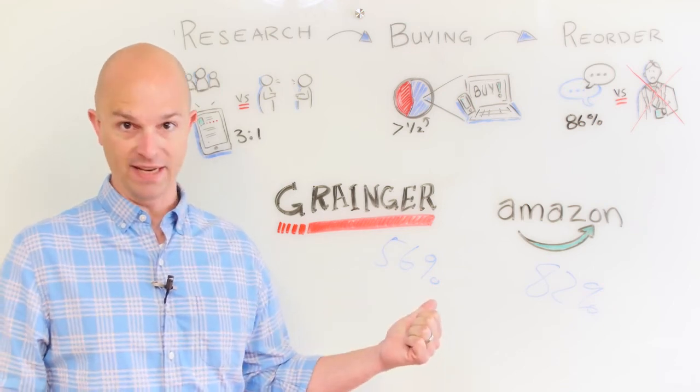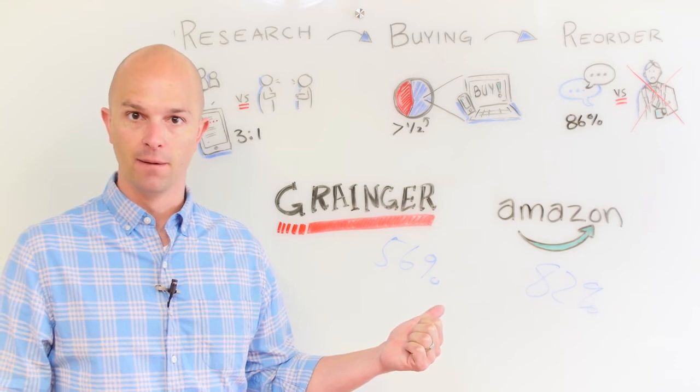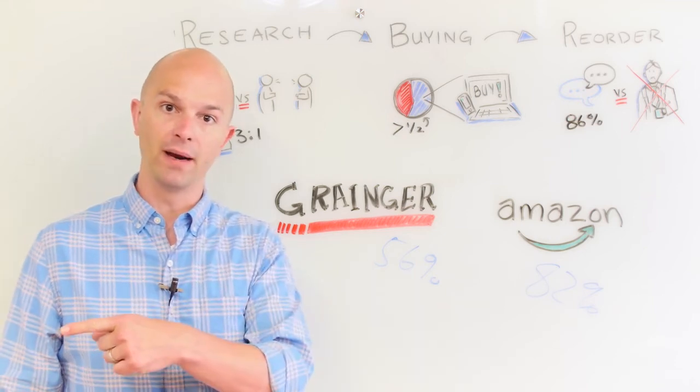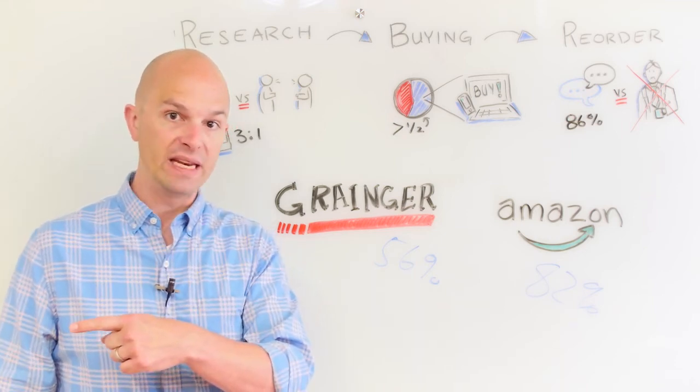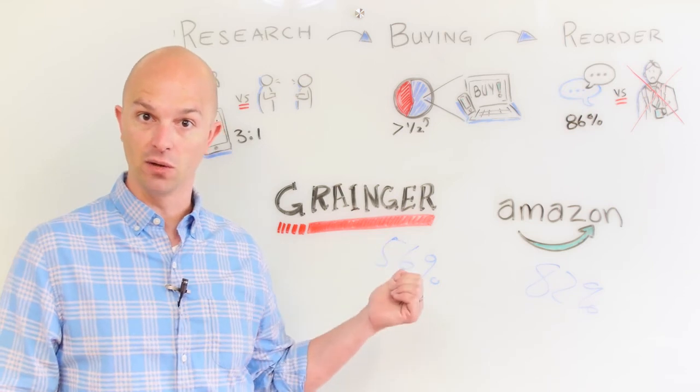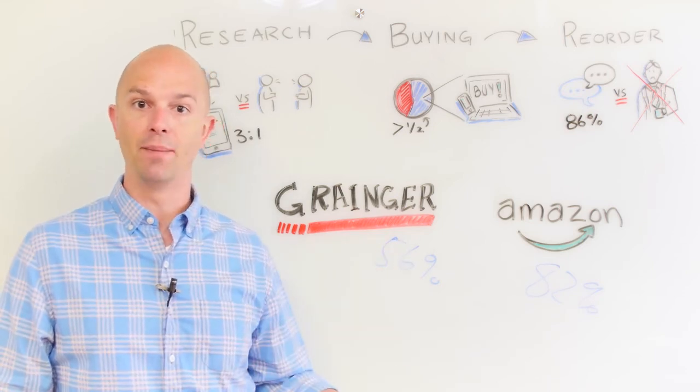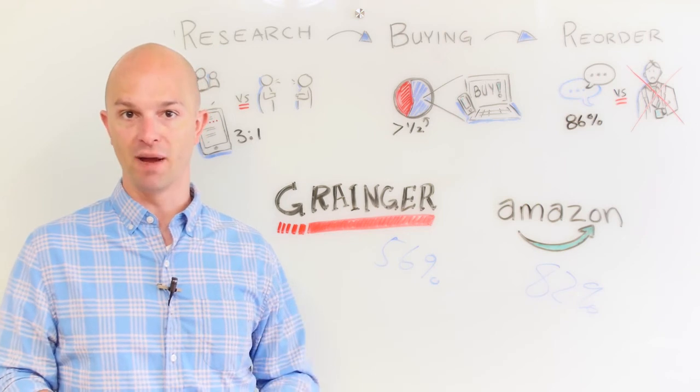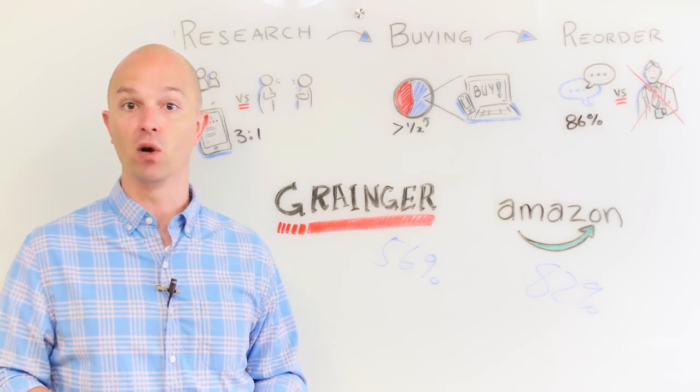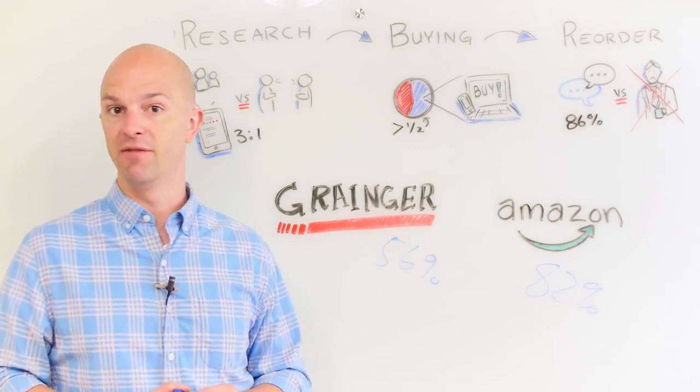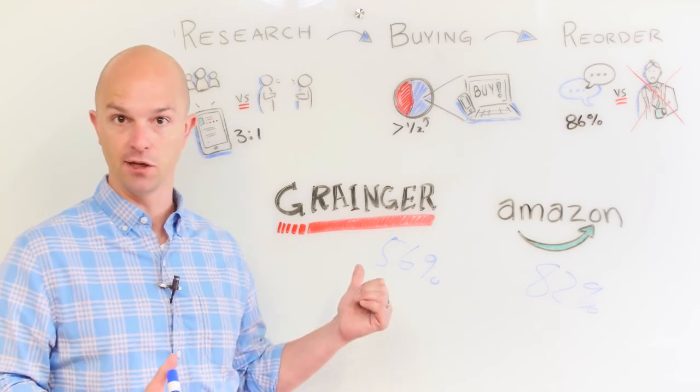You see companies like Anker, which basically didn't exist in 2000, becoming the absolute dominant player over Belkin in 15 years by focusing on digital experience. You see companies like Bai Brands coming out of nowhere and being a multi-billion dollar beverage business, taking a significant amount of market share and shelf space in a very short period of time because they focus on digital experience.